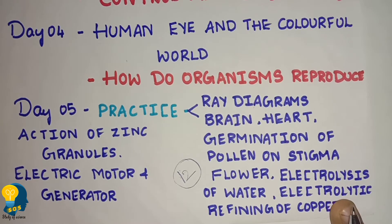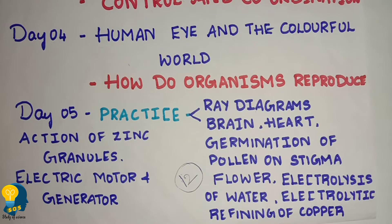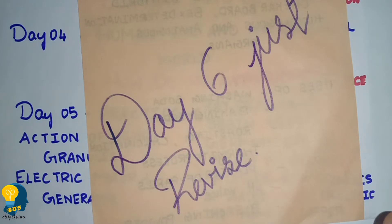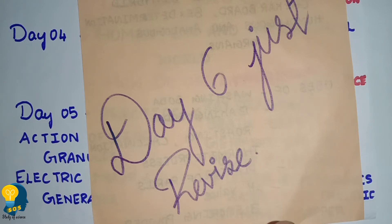Every day, revise what you have done. In five days you cover all 8 lessons completely — every lesson, every concept. Day six is for complete revision. By day five you have done all 8 lessons and diagrams, so day six you revise everything completely.